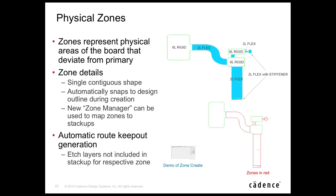A zone is a single contiguous shape that automatically snaps to the design outline during creation. You can map stackups when adding zones or through the new zone manager. Once a zone is created, route keep-outs are automatically generated on the etch layers not included for that respective stackup. For example, on a two-layer flex, route keep-outs are added on four etch layers — top, inner one, bottom, and bottom minus one. This is all done automatically.